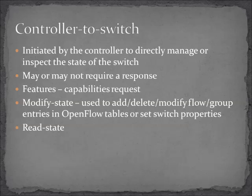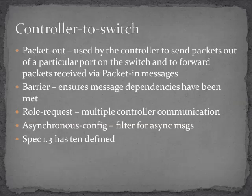Some of the common messages we'll see include features, modify state, and flow mods, as well as asking the switch what's happening. There's a packet out message — the controller telling the switch which port to use for a given frame. There's also a barrier message, which checks for any dependencies associated with the message in question, or simply confirms that the controller wants to know when an action is completed.